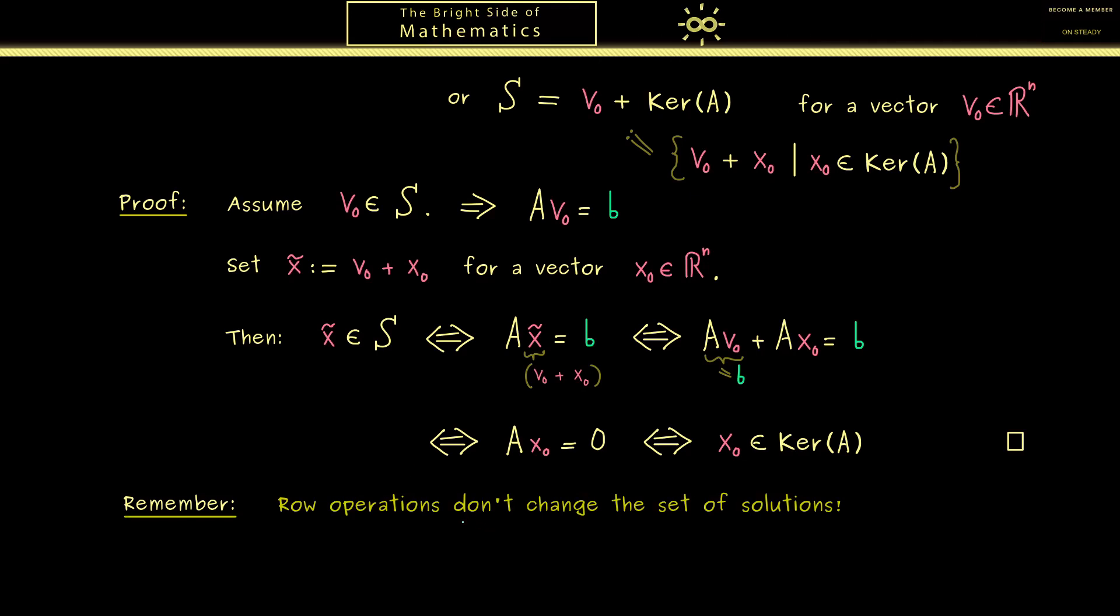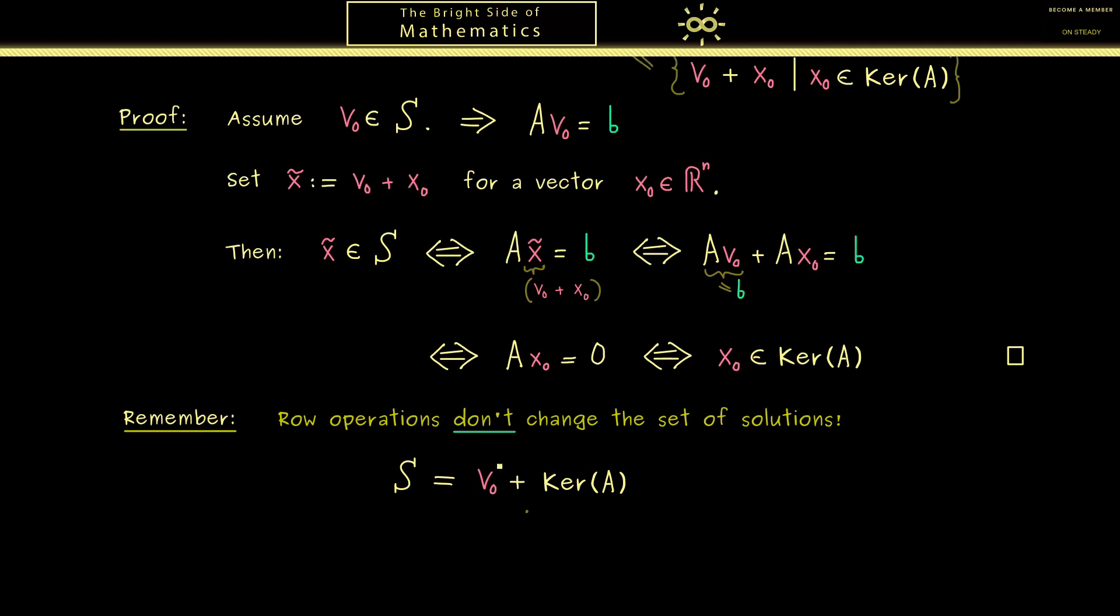Indeed, this is a very important statement, because it means we can use row operations to make our system simpler. There is no huge proof needed for this fact, because we already know everything. For example, we already know that we don't change the kernel of A with row operations. In fact, every invertible matrix M from the left will not change the kernel of A. And on the other hand, if v_0 solves the system with A, it also solves the system with MA.